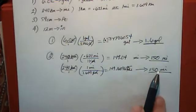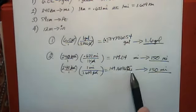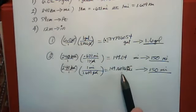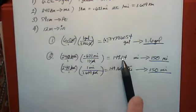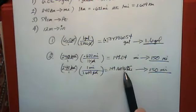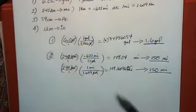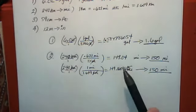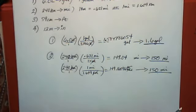The two answers look slightly different on the calculator, but the differences are beyond the proper number of significant figures — they're not real. When you round both to the correct number of significant figures, they are exactly the same. They only seem different because the calculator doesn't understand significant figures.